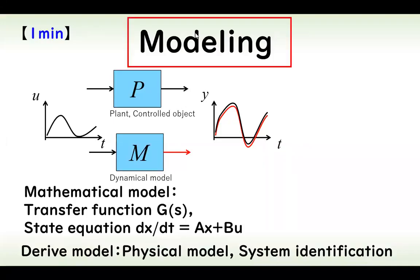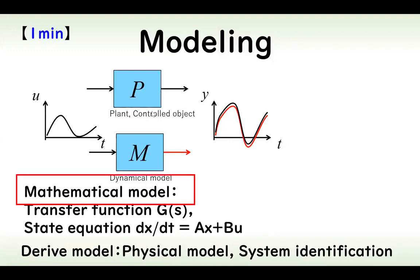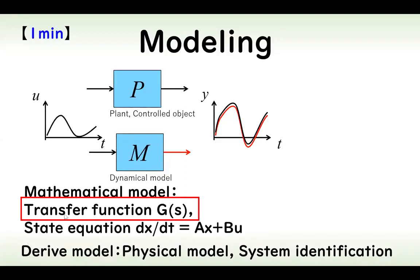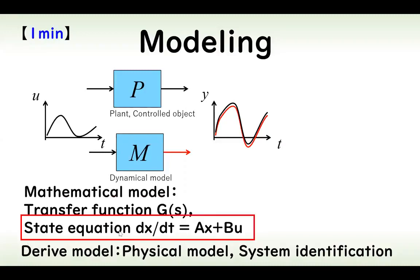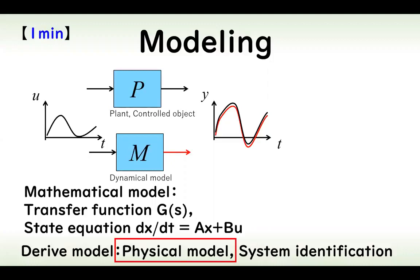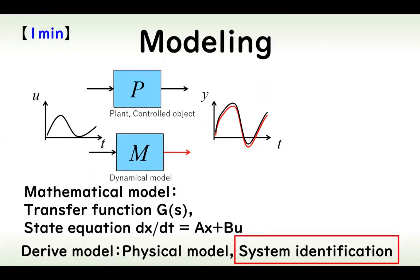In control engineering, a plant model is important to design a controller. The plant model is given as a mathematical dynamical model, such as a transfer function or state equation. The model is derived using physical modeling or using the input-output relation of the plant system, which is known as system identification.